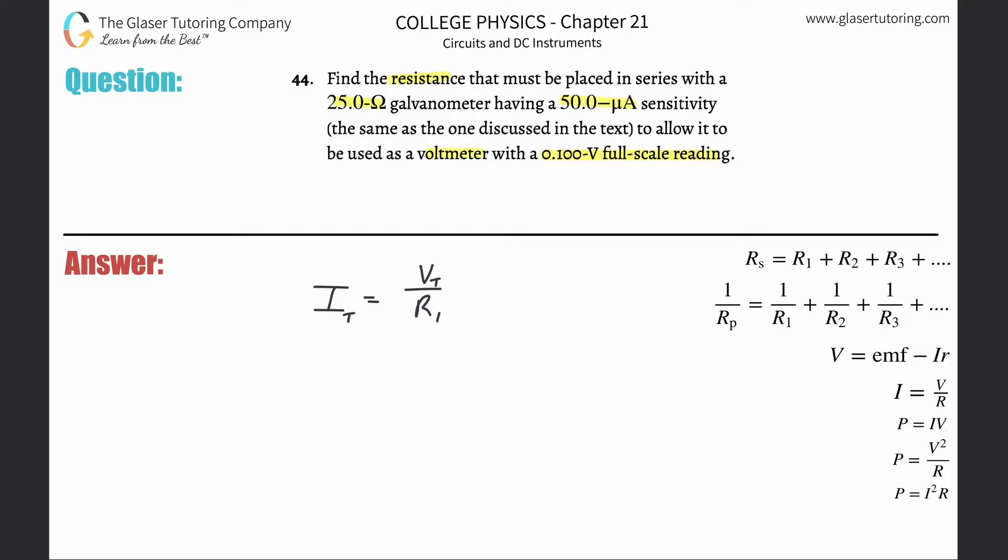Now this total resistance is essentially the equivalent resistance, which, remember, if these two things are in series with one another as it said in the problem, we would just be adding them together. So we basically have something that looks like this. Now we can call this R1 plus the resistance of the galvanometer.